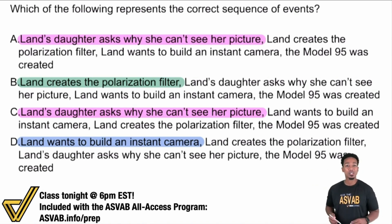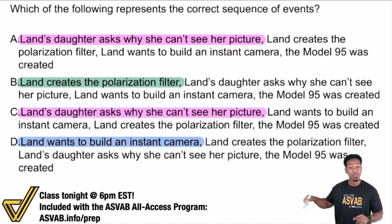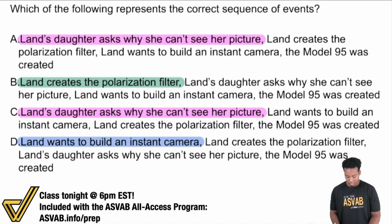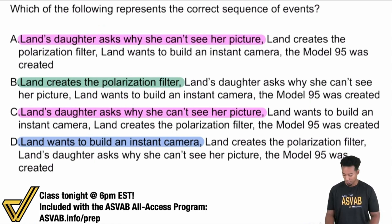The strategy for sequence of events: start with the choices. Mark them — daughter asking why she can't see the picture, polarization filter, wants to build an instant camera. I skipped C because it's the same as A. Now I'll go back into the passage and see which one of those happens first.